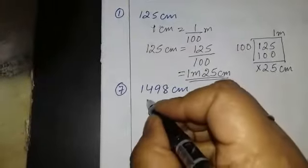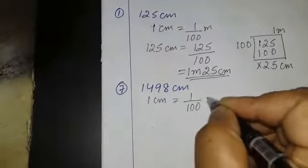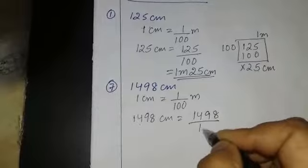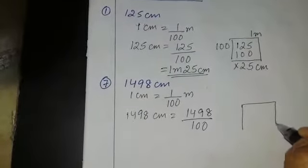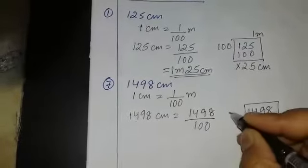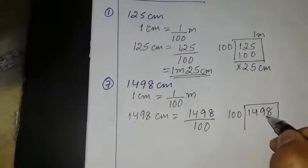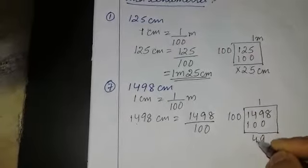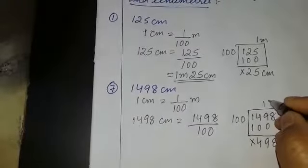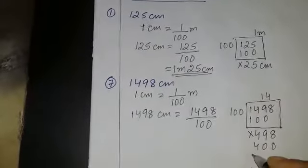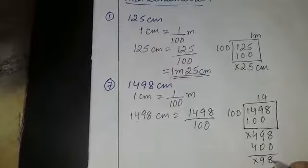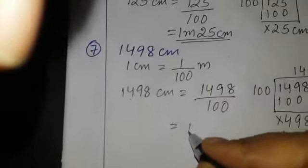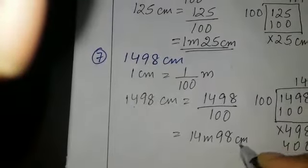Next question: 1498 centimeter. We write: 1 cm is equal to 1/100 meter, so 1498 cm equals 1498 ÷ 100. Dividing: 100 goes 14 times into 1498, remainder 98. So the meter part is 14 and the centimeter part is 98. The answer is 14 meter 98 centimeter.